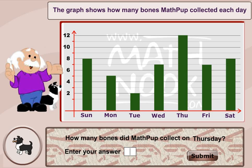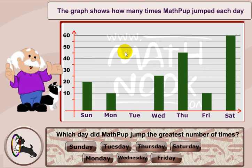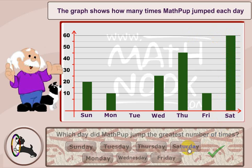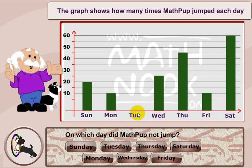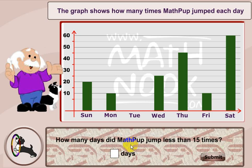Once you complete this set of questions, you'll be taken to the next section. It says, 'The graph shows how many times MathPup jumped each day.' The question it's asking is: 'Which day did MathPup jump the greatest number of times?' If I look over on the chart, it's obvious that MathPup jumped 60 times on Saturday, and that's the day he jumped the most. So let's go ahead and click on Saturday — that's correct. And 'Which day did MathPup not jump?' — that's Tuesday. I'll go ahead and click Tuesday. At the end of this section, you'll also get a rating telling you how many questions you got right.